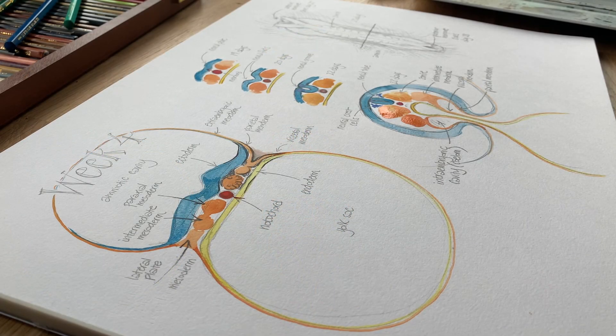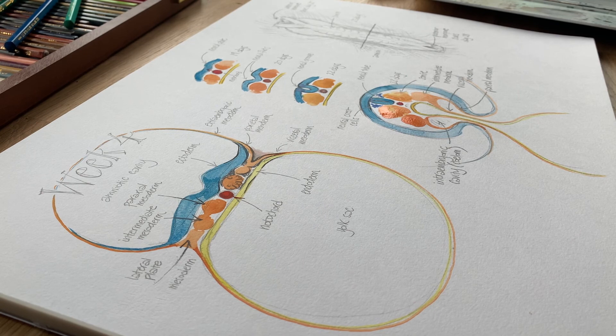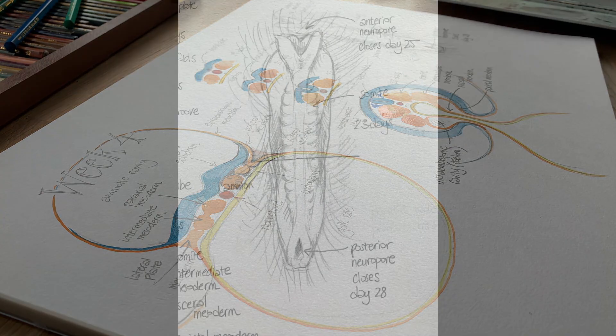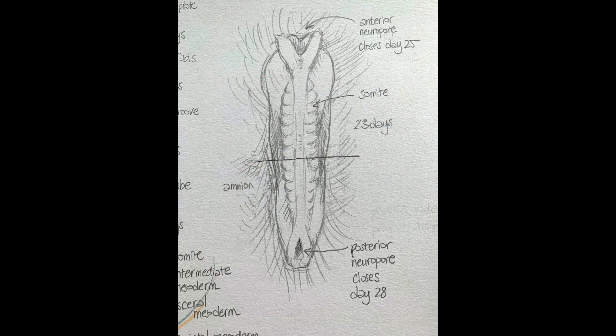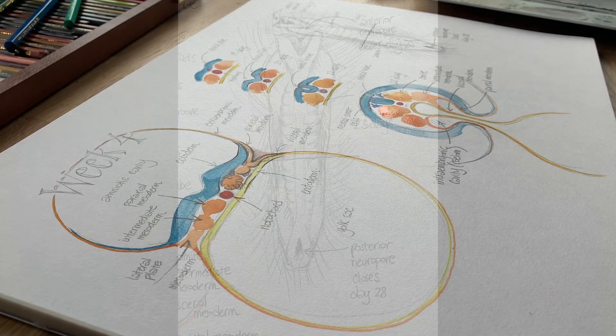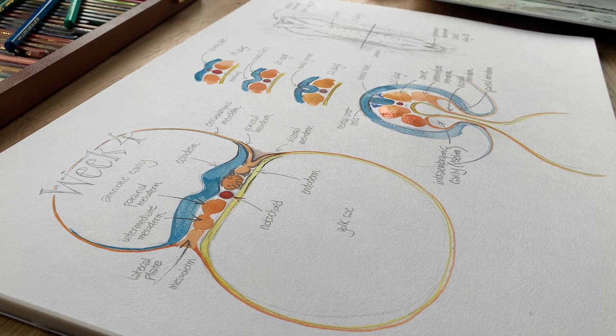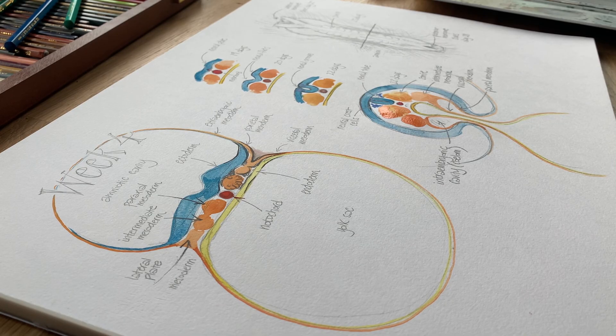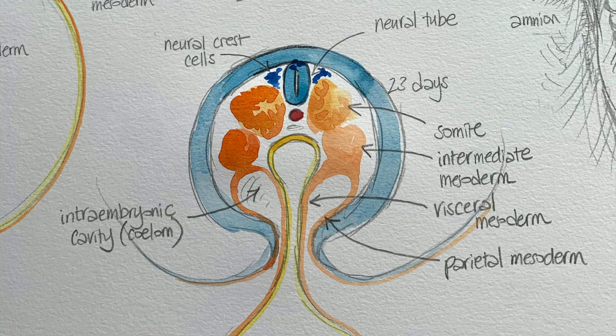So the main changes that have happened during week four are neurulation - the formation of a neural tube which is the foundation of the central nervous system, the brain and the spinal cord. If things go wrong at this point, they can have disastrous consequences - neural tube defects originate from failures of that neural tube to close. What we've also seen in week four is this folding of the embryo, which really transforms a flat disc into something which looks a little bit more like a human body, but there's still a long way to go.